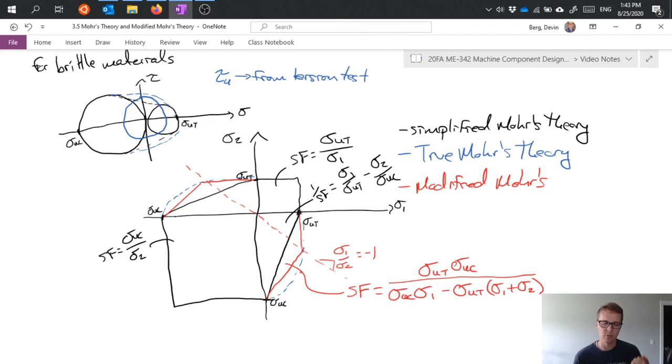and it gives us an approximation right if we look at our lines, we see that you know the black line in quadrant 2 as an example compared with the blue line is a little bit off whereas the red line which has these two straight segments is much closer to the true Mohr's theory than the simplified version. So it gives us something to start with and I'll go ahead and stop there.